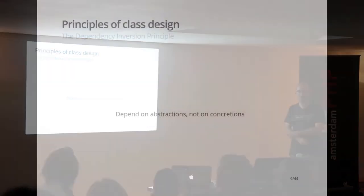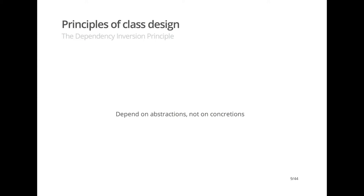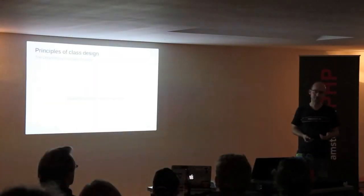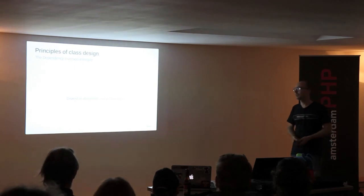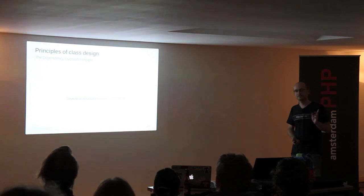The Dependency Inversion Principle says: depend on abstractions, not on concretions. This is most obvious when you have constructor arguments and you want to type-hint them. You should type-hint the interface, not the class, to indicate that you allow any class that implements the same interface to be exchanged. So, we have now the five SOLID principles. Any questions before we continue?